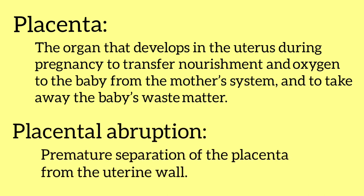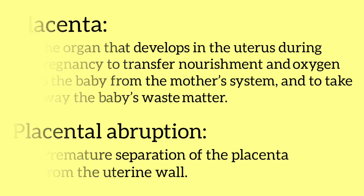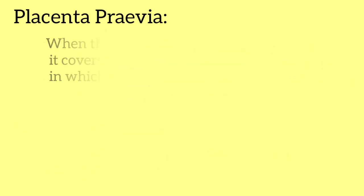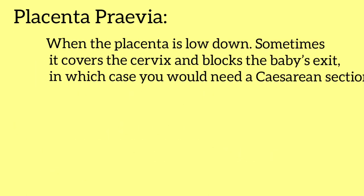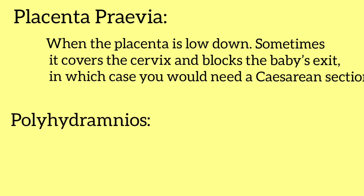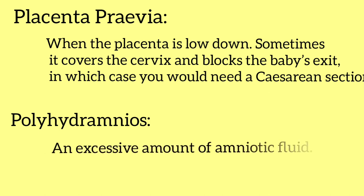Placental abruption means premature separation of the placenta from the uterine wall. Placenta previa is when the placenta is low down and sometimes covers the cervix, blocking the baby's exit, requiring a caesarean section. Polyhydramnios is an excessive amount of amniotic fluid.